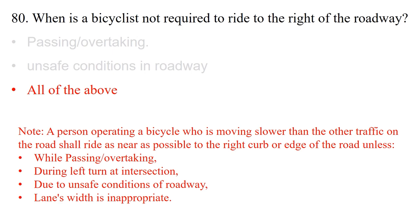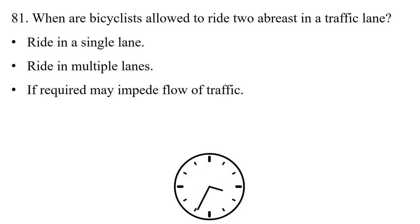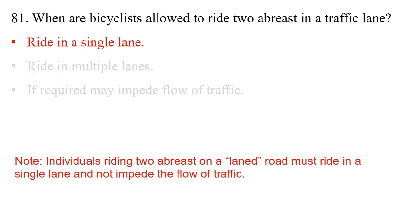Question: When are bicyclists allowed to ride two abreast in a traffic lane? Option 1: Ride in a single lane. Option 2: Ride in multiple lanes. Option 3: If required, may impede flow of traffic. The answer is option 1: ride in a single lane. Individuals riding two abreast on a lane road must ride in a single lane and not impede the flow of traffic.